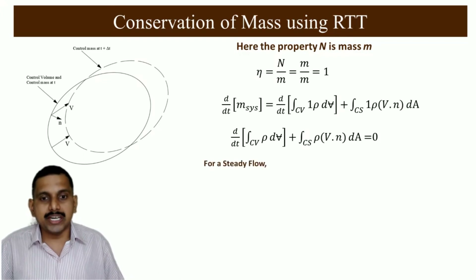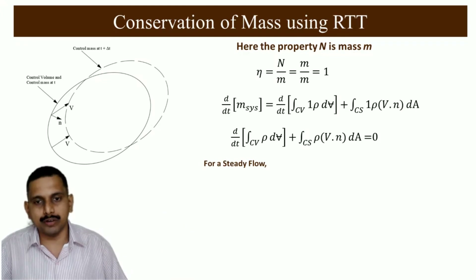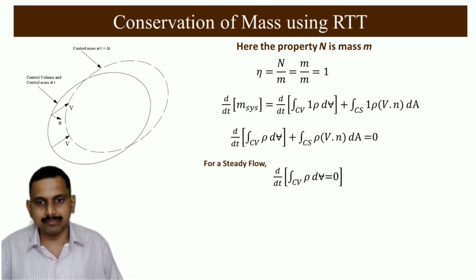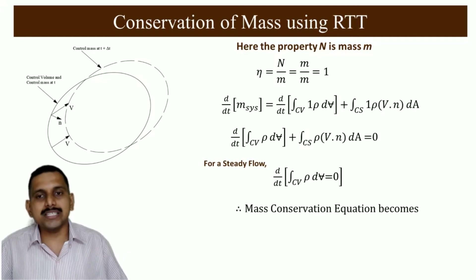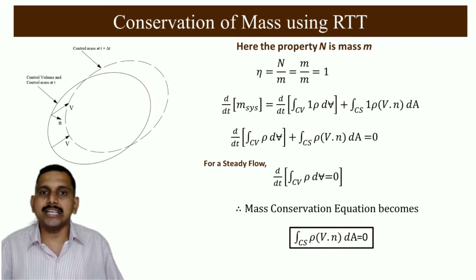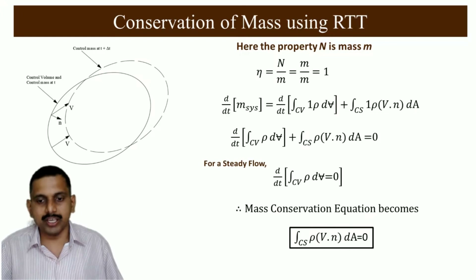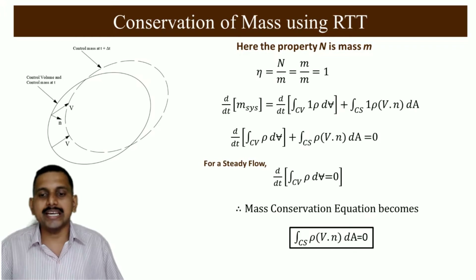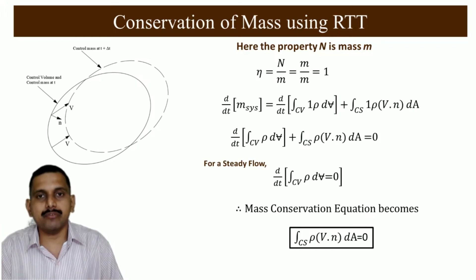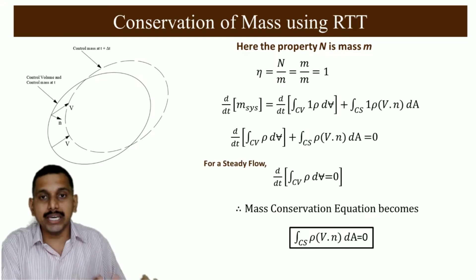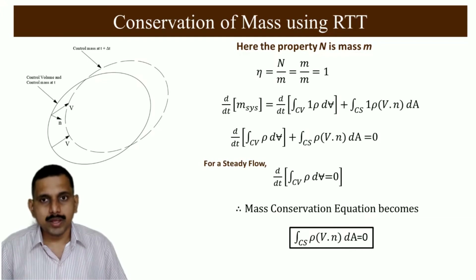For steady flow, there is no change with respect to time, so d/dt equals zero and drops out. The mass conservation equation for steady flow in integral form becomes: the integral over the control surface of ρ·(V dot n) dA equals zero. Now let us see how this can be applied to engineering use.